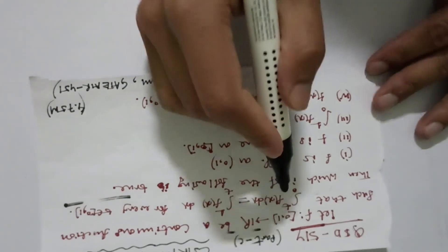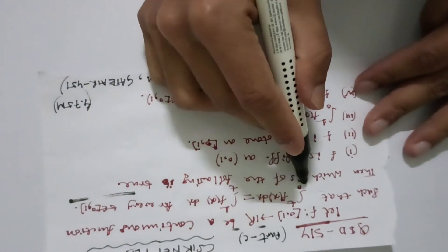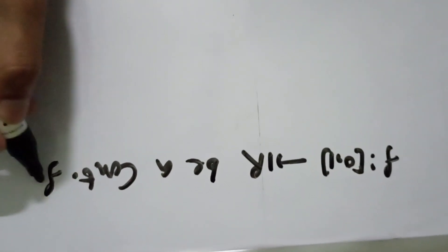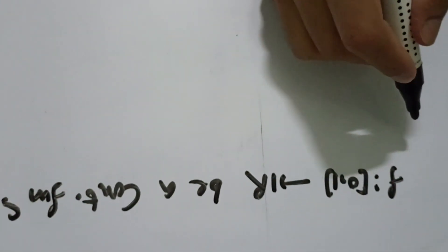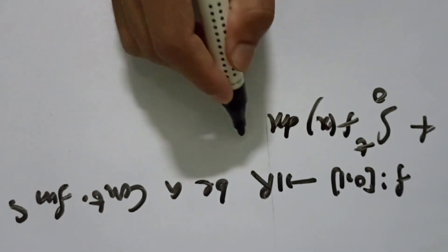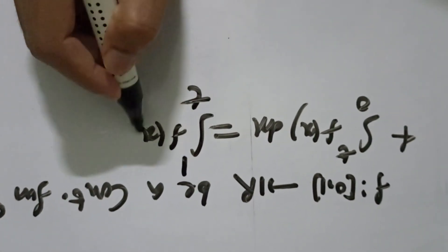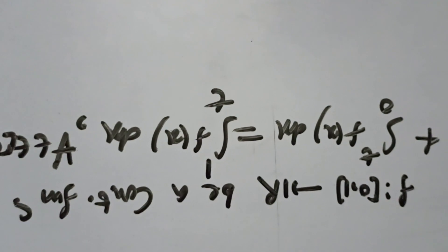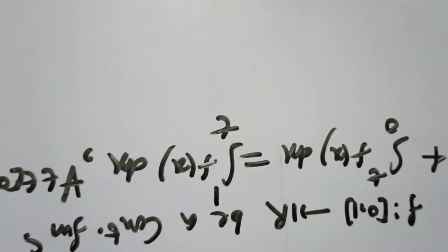So F is a continuous function from [0,1] to R with the condition: ∫₀ᵀ F(x)dx = T² ∫₁ F(x)dx for every T ≥ 0. Let me write out this condition clearly before proceeding with the four options.